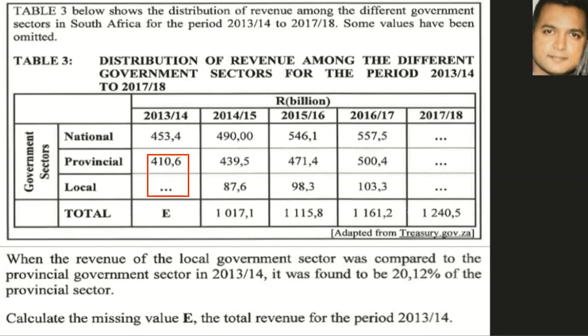The table below shows the distribution of revenue among the different government sectors. You can see there is national, provincial, and local on the table, and there are a couple of years displayed. Importantly, the heading states the figures are in rands, but each figure represents billions — that is very important to note when writing down the numbers.